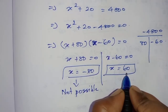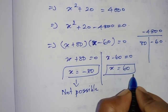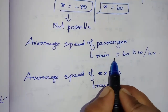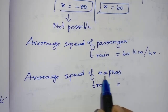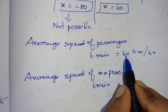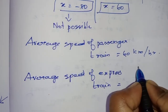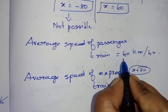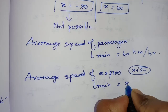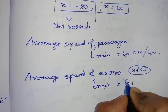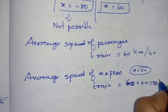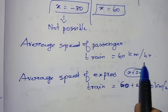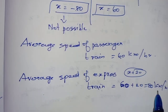Since x represents the average speed of the passenger train, the average speed of the passenger train is 60 km per hour. The average speed of the express train is x plus 20, which equals 60 plus 20 equals 80 km per hour. So the final answers are: average speed of passenger train is 60 km per hour, and average speed of express train is 80 km per hour.